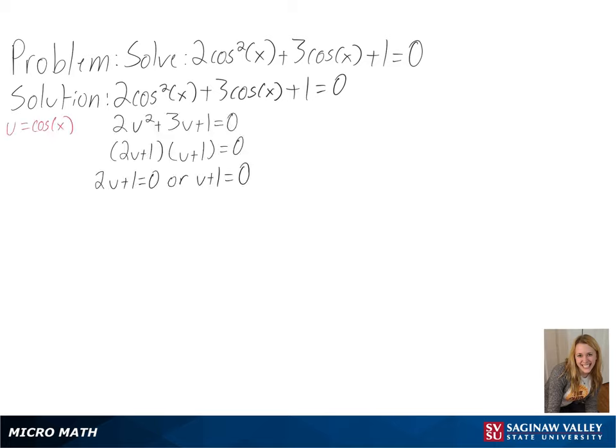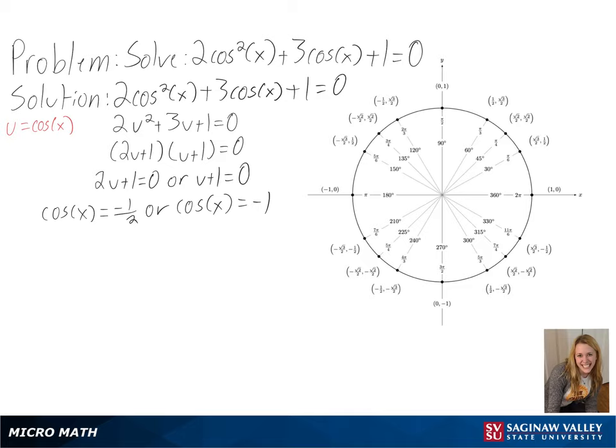We are left with 2u equals negative 1 or u equals negative 1. After simplifying and plugging cosine of x back in, we can look at a unit circle to see where we get these values.